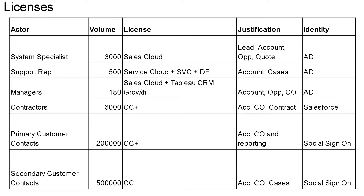For managers, there are 180 managers located at regional and local offices. I recommend going with Sales Cloud plus WCRM Growth license. Justification is they need access to accounts, opportunities, custom objects, and cases. Their identity would be Active Directory. For 6,000 contractors working on installation at customer locations, I recommend going with Community Cloud Plus license since they need access to contracts, customer accounts, and work orders. Their identity would be Salesforce primary.